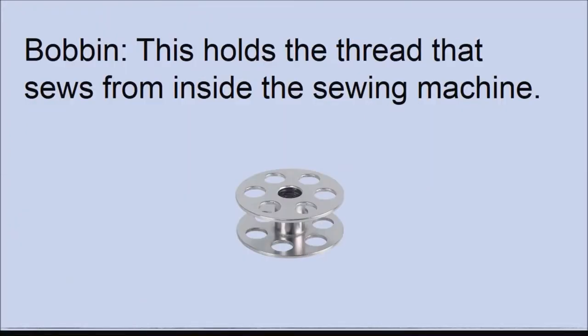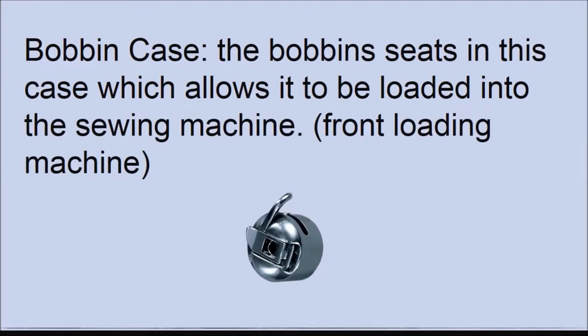First, we'll start with the bobbin. The bobbin holds the thread that comes from inside the machine, sometimes known as the lower thread or the bobbin thread. We have the bobbin case — this is the case that the bobbin sits in before it is loaded into the sewing machine. Note that you would only have a bobbin case if your sewing machine is a front-loading bobbin sewing machine.